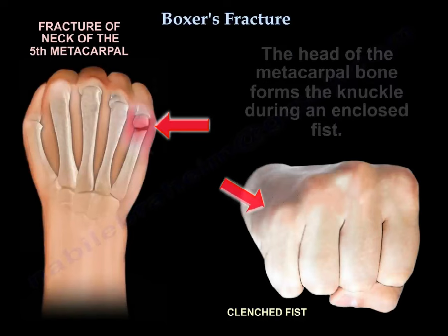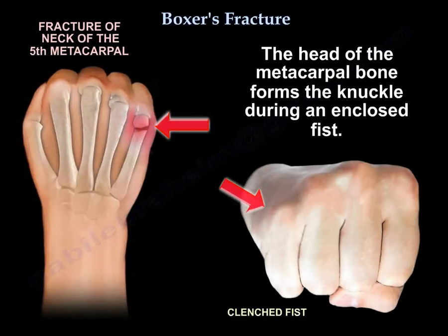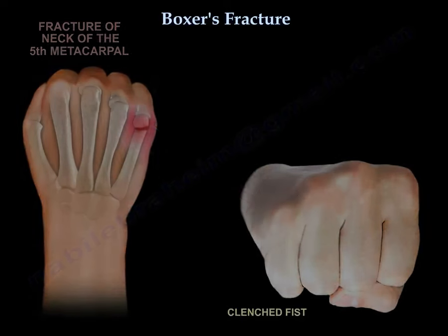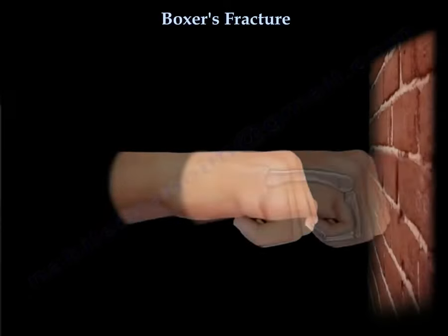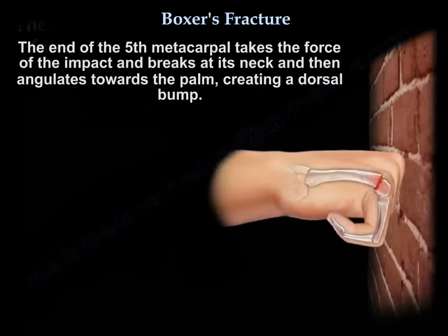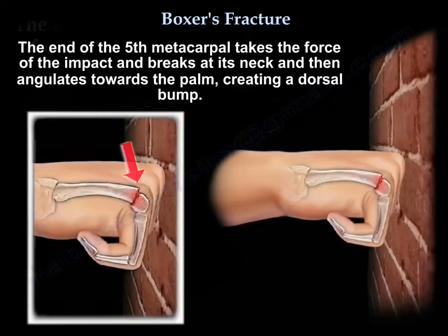The head of the metacarpal bone forms the knuckle during a clenched fist. The end of the fifth metacarpal takes the force of the impact and breaks at its neck, angulating towards the palm and creating a dorsal bump.